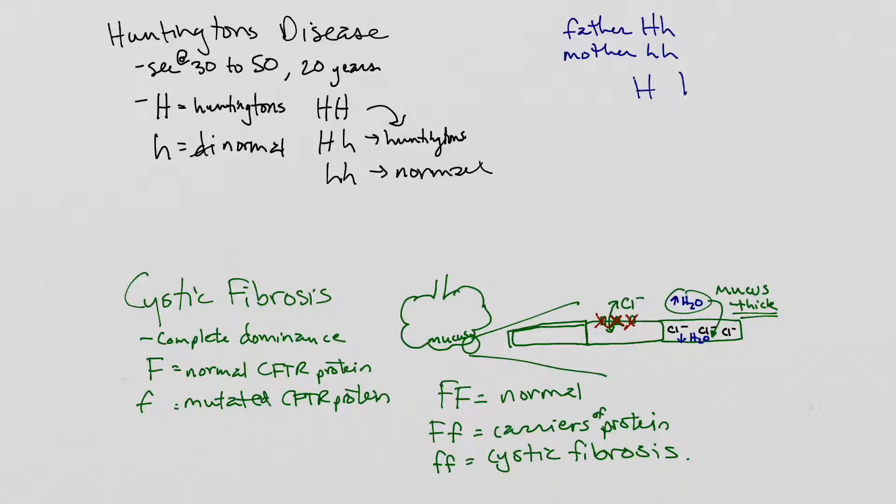So, we do our normal Punnett Square here. And then we have two possibilities of passing on the Huntington's disease allele. And we have two possibilities of not passing it on. Which means there's a 50% chance that you would pass on that Huntington's disease allele to your children.